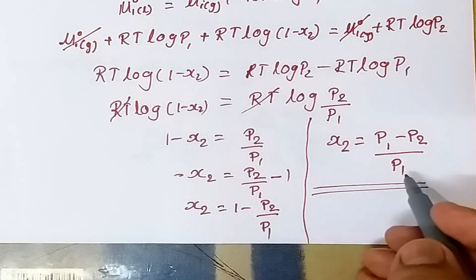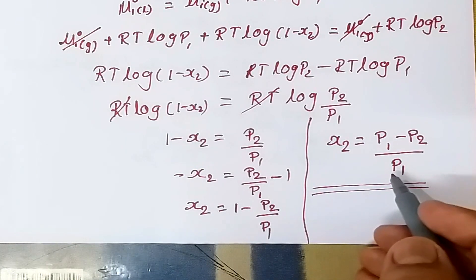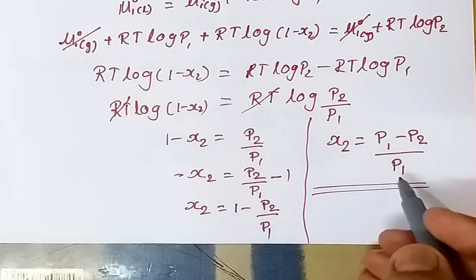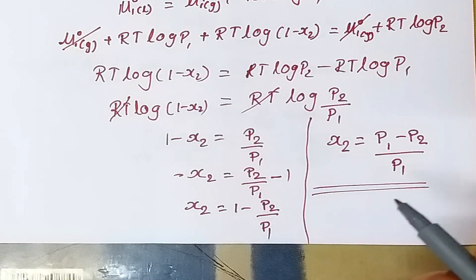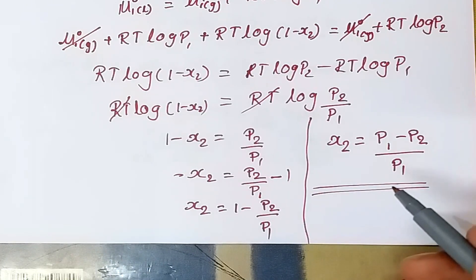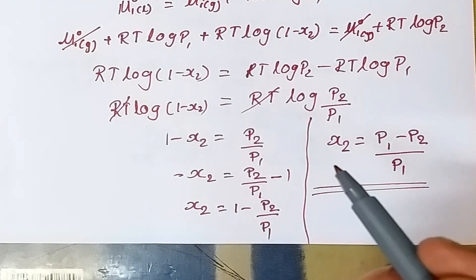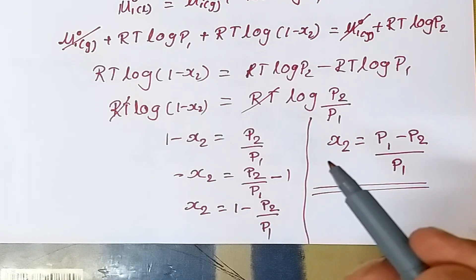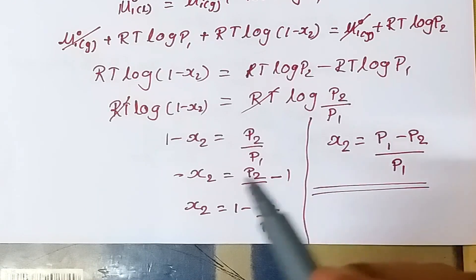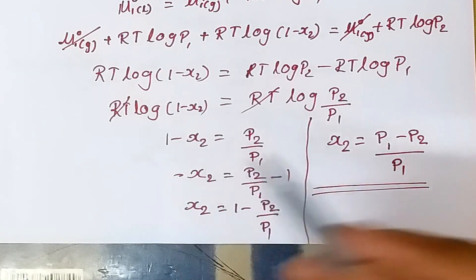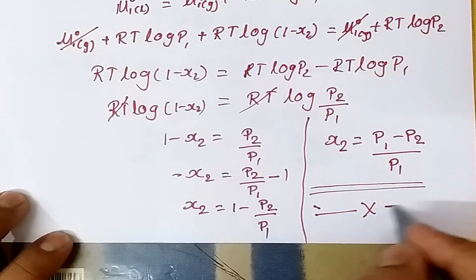Hence we have proved Raoult's law using chemical potential. In the same way, we can also derive the Gibbs adsorption isotherm, phase rules, and other derivations involving fugacity and activity. To summarize, chemical potential is the change in the free energy of the system when we add one mole of any constituent — the free energy may increase or decrease, and that change is the chemical potential. Thank you.